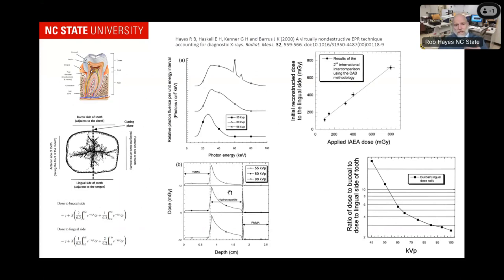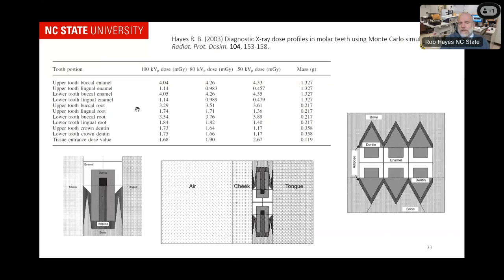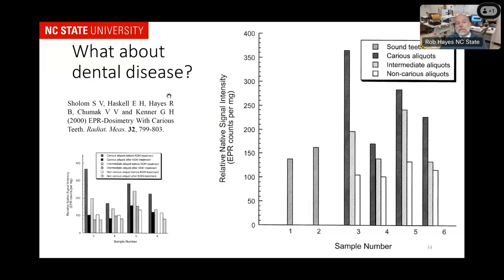Even when you change the energy of the X-rays, you can still get very good information to reconstruct those doses. We published this in Radiation Protection and Dosimetry. There's also a paper on what happens if there's disease — and this comes back to retrospective dosimetry for forensics, where you're going to get all kinds of different impurities. Just like with teeth, you've got to think about these impurities, but you can correct for them when you spend the time.